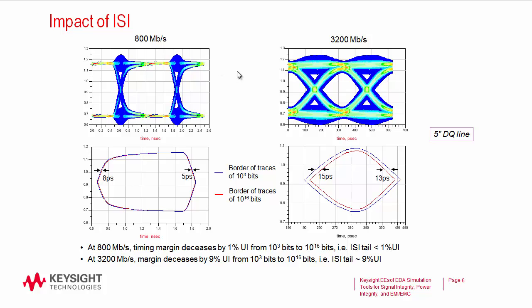The reason is that unit interval is dropping, the data rates are going up, and unit interval is one-quarter in DDR4 what it was in prior generations. This means that ISI causes a blurring of the eye diagram, and you no longer get these very steep walls on the bathtub curves that I'll show in the next slide.